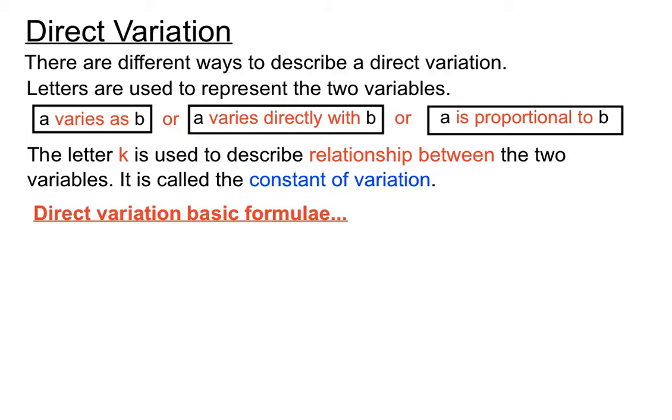There's some basic formula. The most common basic formula, if you're talking about A varies as B, we say A equals KB. If we've got Y varies as X, we sometimes say Y equals KX. That's another common version of the direct variation formula. If you're looking at direct variation, you have the A and the K and the B all on the one line and the K is multiplying by the B.